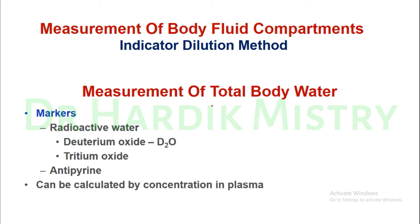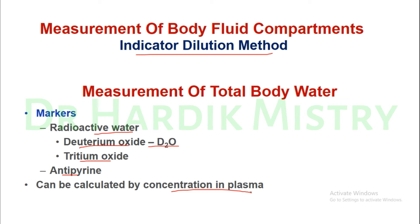Measurement of body fluid compartments uses the indicator dilution method. For total body water, markers include radioactive water such as deuterium oxide (D2O) and tritium oxide, as well as antipyrine, calculated via concentration in the plasma.